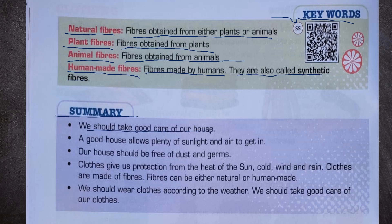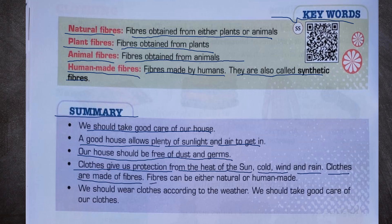Summary: We should take good care of our house. A good house allows plenty of sunlight and air to get in. Our house should be free of dust and germs. Clothes give us protection from the heat of the sun, cold wind, and rain. Clothes are made of fibers, which can be either natural or human-made. We should wear clothes according to the weather and take good care of them.